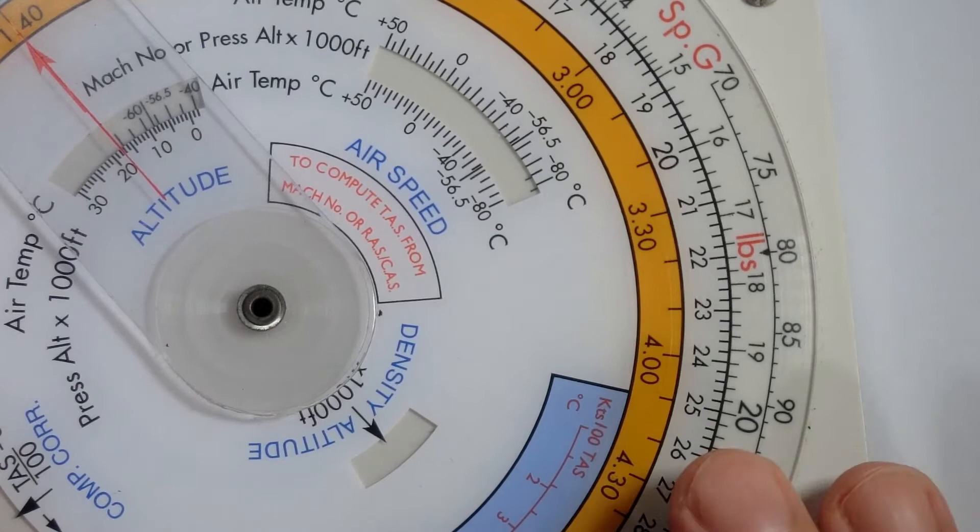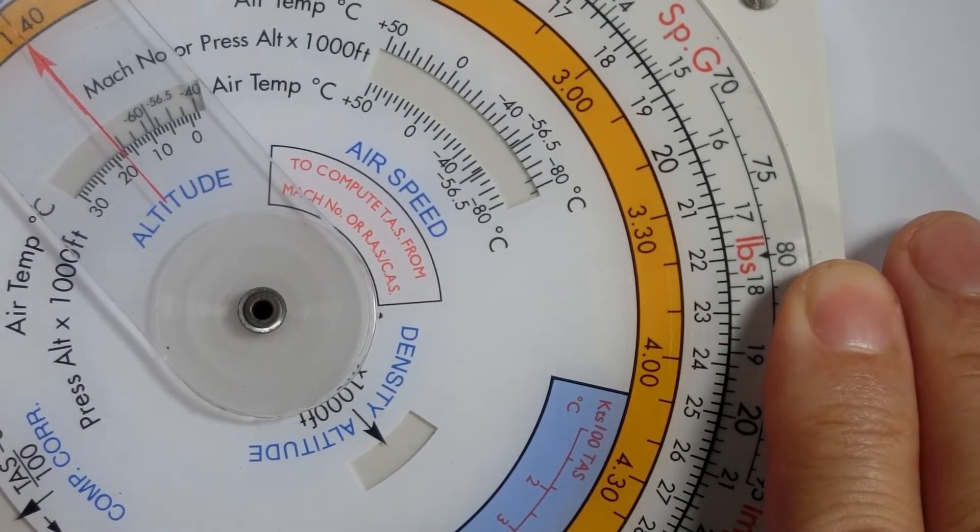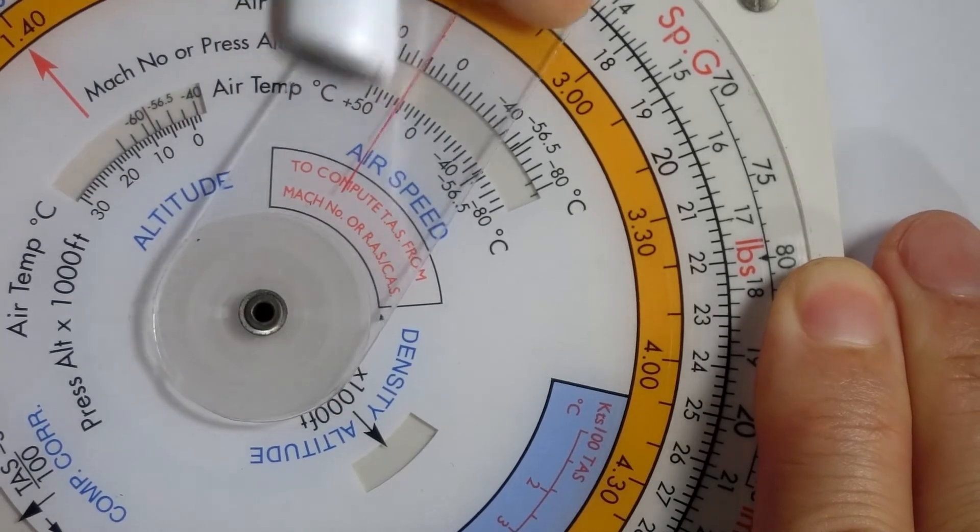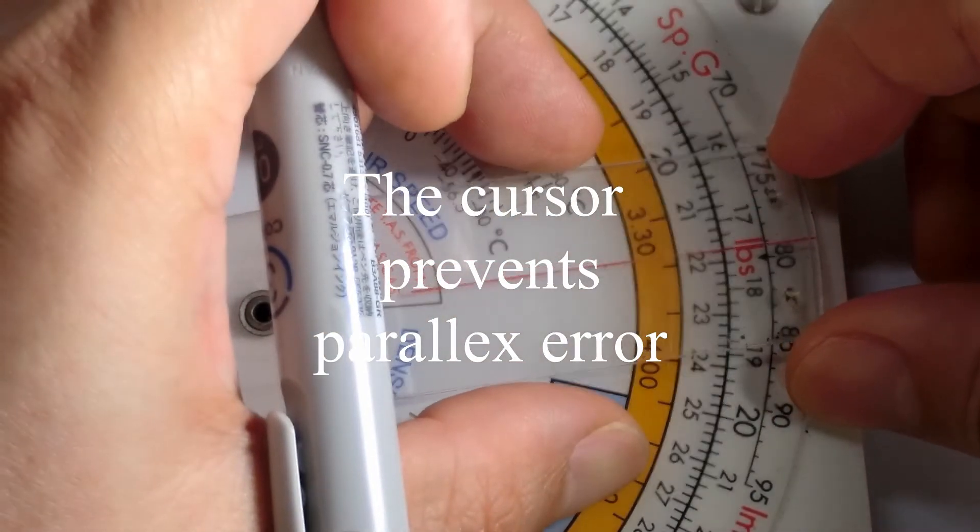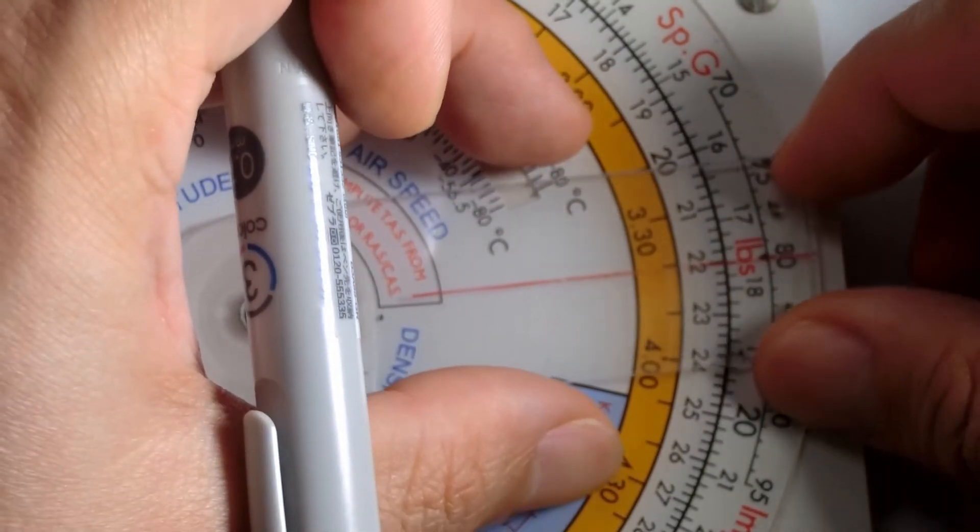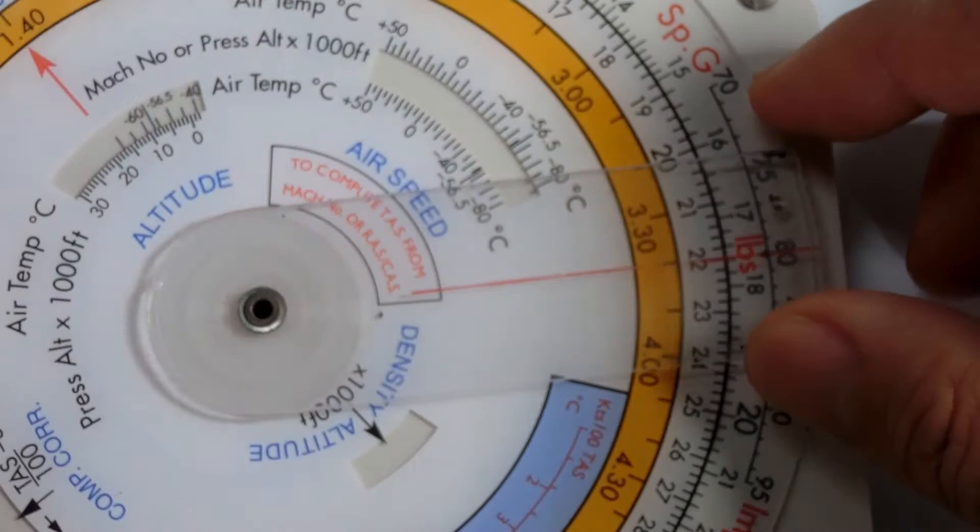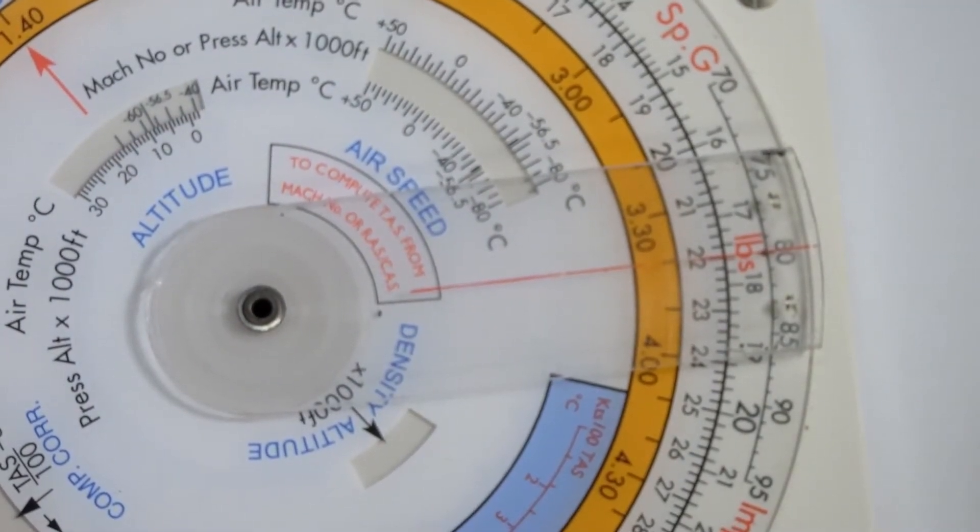Now I hold down both the inner and outer scale and move the cursor over to pounds. You can see that one kilogram is equivalent to 2.2 pounds.